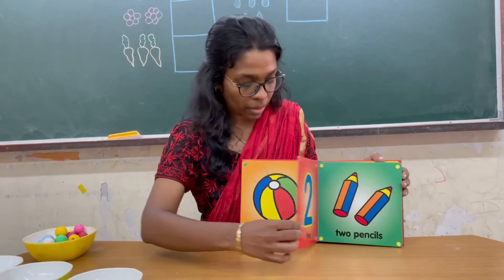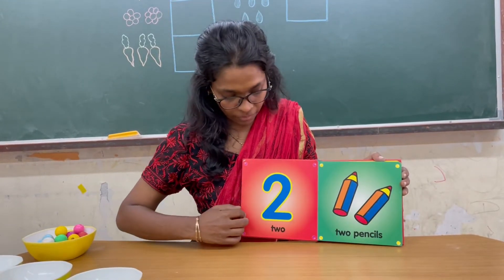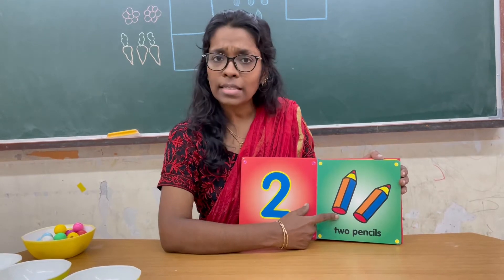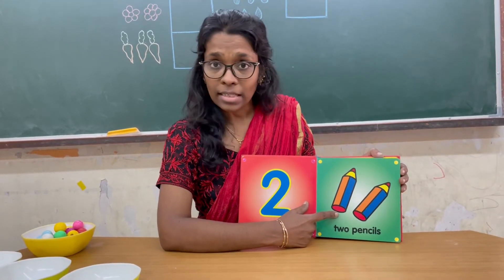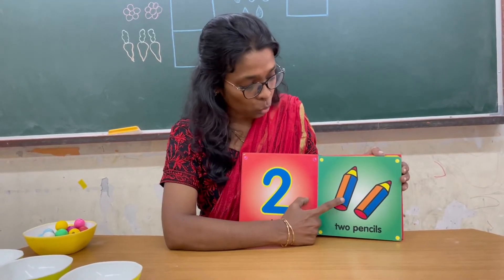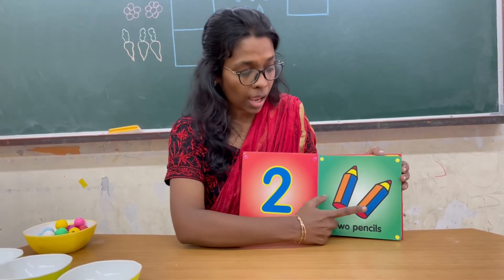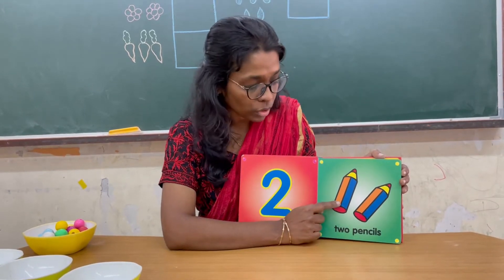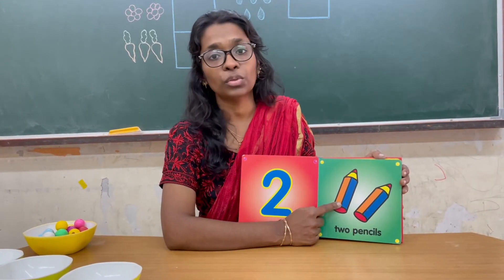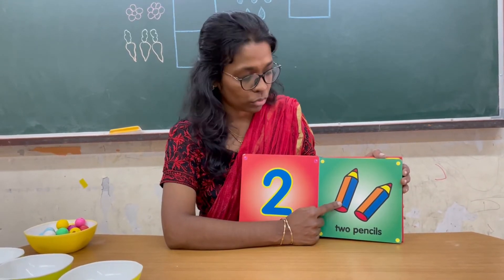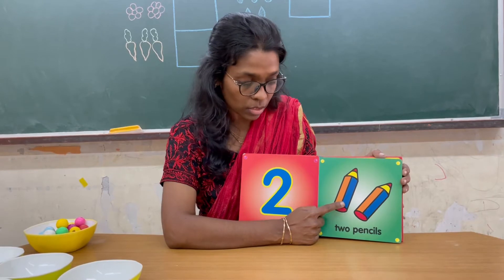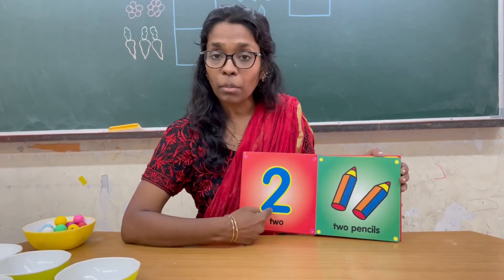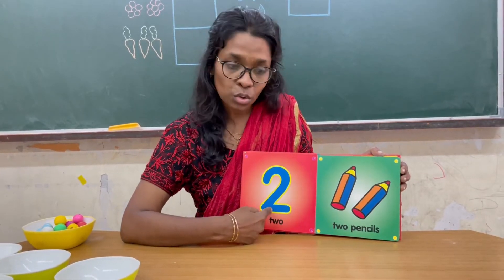Now let's see what comes next. How many pencils are there here? Let's count: 1, 2. Whenever you count, you have to touch those things and count — like this, 1, 2. So this is number 2.